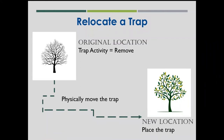One complication that sometimes confuses people is relocating a trap. The proper workflow: visit the original trap location, record a trap activity of 'remove.' People often wonder if that symbol should disappear from the map — no, it stays. The symbol remains as a record of the entire history of that trap location, with the last activity recorded as 'remove.' Then you physically move the trap to the new location and begin the workflow again by placing a new trap there.